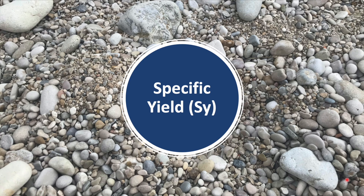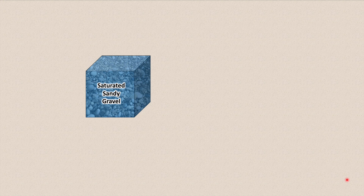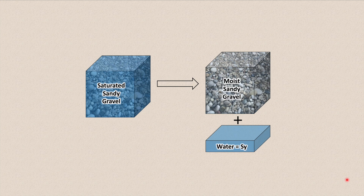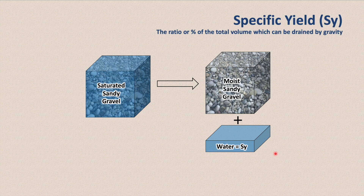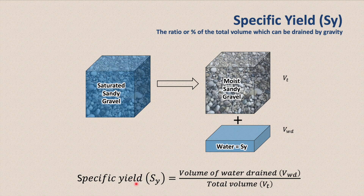Let's look at the specific yield. If we had a fully saturated sandy gravel and we let the water drain out under gravity, then the volume of water which drains out can be used to calculate the specific yield. Specific yield is the ratio or percentage of the total volume which can be drained by gravity. It is expressed as SY and calculated as the ratio of the water drained divided by the total volume.